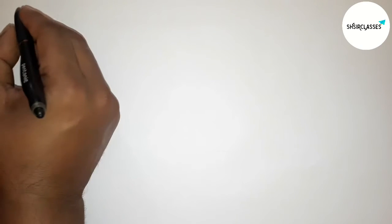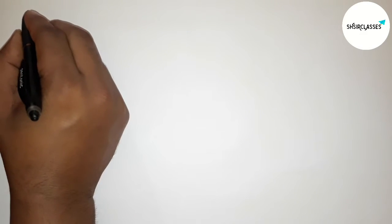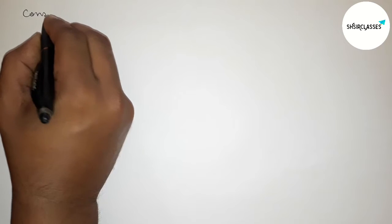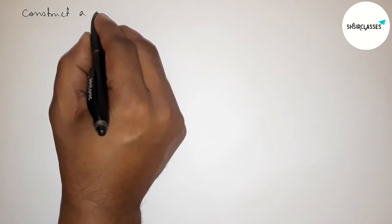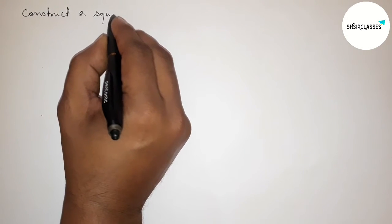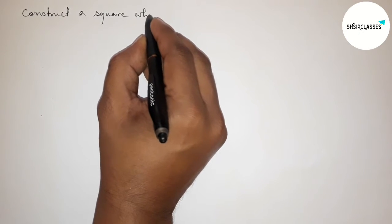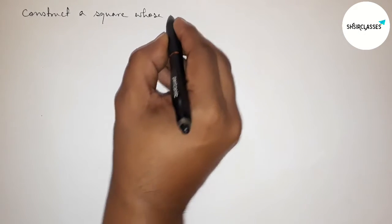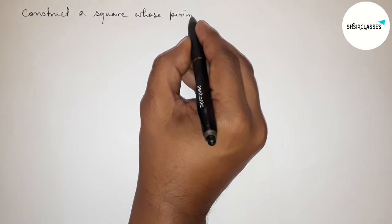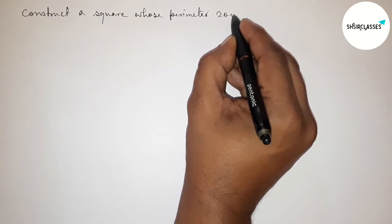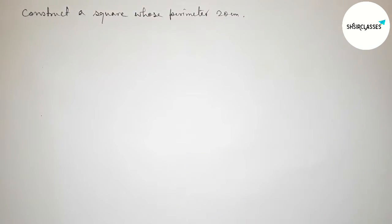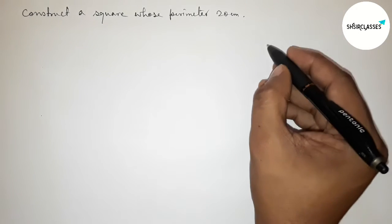Hi everyone, welcome to SISARE classes. Today in this video we have to construct a square whose perimeter equals 20 centimeters. Please watch the video till the end. Let's start.